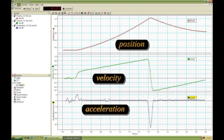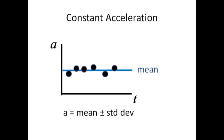If you obtain flawed results, you can delete runs using the experiment menu item. Notice that the position versus time is a curved quadratic shape. The velocity is a straight line and the acceleration is a flat line for times when the cart is undergoing constant acceleration. For the acceleration versus time graph, we expect a flat line and wish to measure the mean value and the standard deviation to approximate the error.